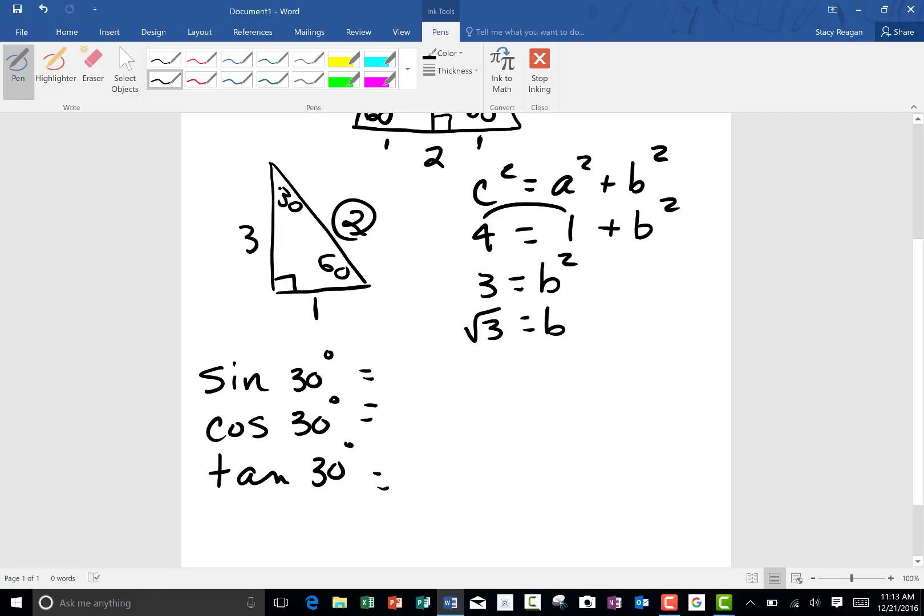So sine of 30, here's the 30 degree angle, side opposite over hypotenuse would be 1 half. Cosine of 30 would be side adjacent over hypotenuse, so square root of 3 over 2. And then tangent of 30 is side opposite over adjacent, so 1 over square root of 3.